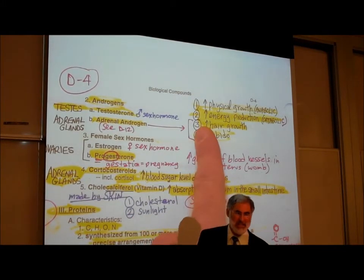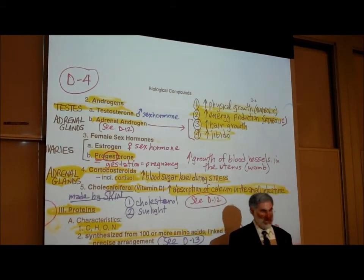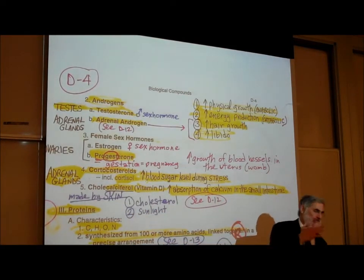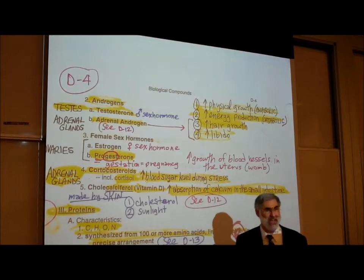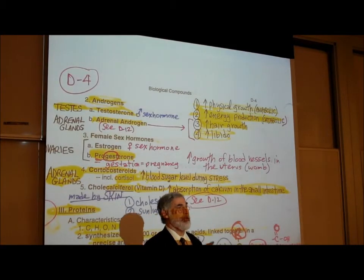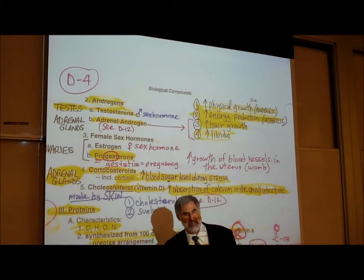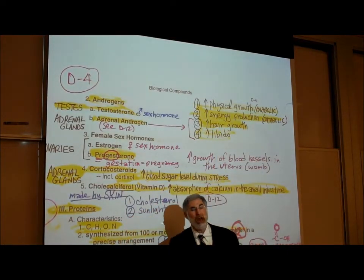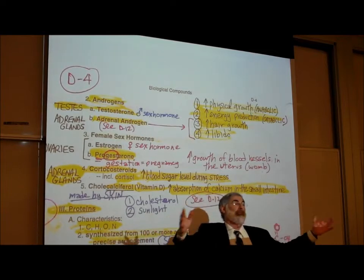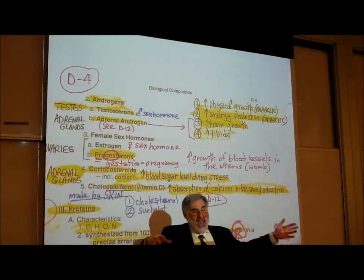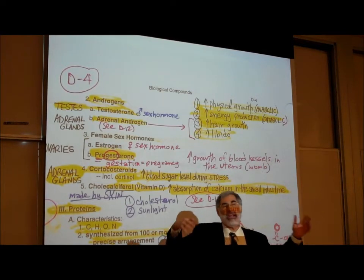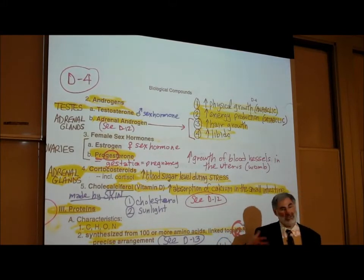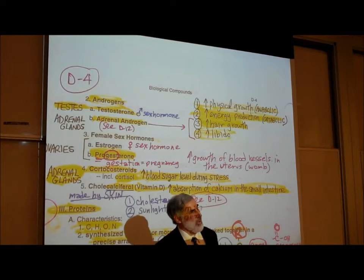Testosterone also increases energy production — it speeds up the breakdown of food for energy. The technical term for breaking down food for energy is a catabolic reaction, also from page A3. So testosterone is both anabolic and catabolic. Guys tend to be larger than females because of testosterone, and they break down food at a faster rate and generate a higher level of energy. There's a price to be paid for this increased metabolic rate — guys don't live as long.